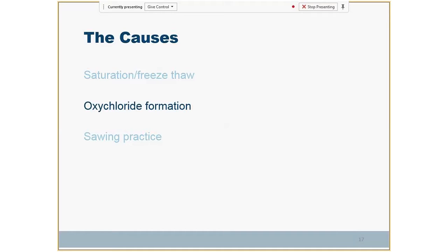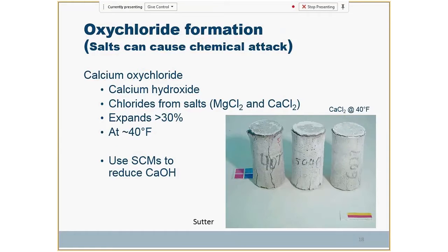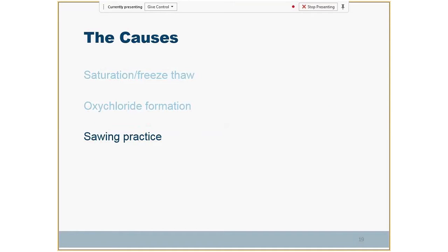Calcium oxychloride formation is something Larry Sutter and Jason Weiss have worked on. Primarily, calcium oxychloride forms from a combination of the calcium hydroxide in the cement and the chlorides from the salts. That material can expand up to 30 percent. Normal freeze-thaw freezing is about six, seven, or eight percent — this is 30 percent. It can happen up in the 40-degree temperature range. This is part of what we believe is happening to these joints — a problem we didn't see 30 or 40 years ago.